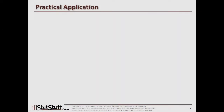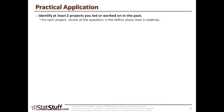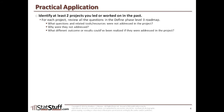Before we close this lesson, let's discuss how we can apply some of these concepts in a practical way. Just as we did before on the level one and level two DMAIC roadmap, we want to do the same kind of thing now for level three — at least with the Define phase. Identify at least two projects that you might have led or worked on in the past. For each of those projects, review the questions discussed in the Define phase down to the level-three layer. Find out which questions, related tools, or resources were not addressed in those projects, why they were not addressed, and what different outcomes or results you could have gotten if you had addressed those particular items.